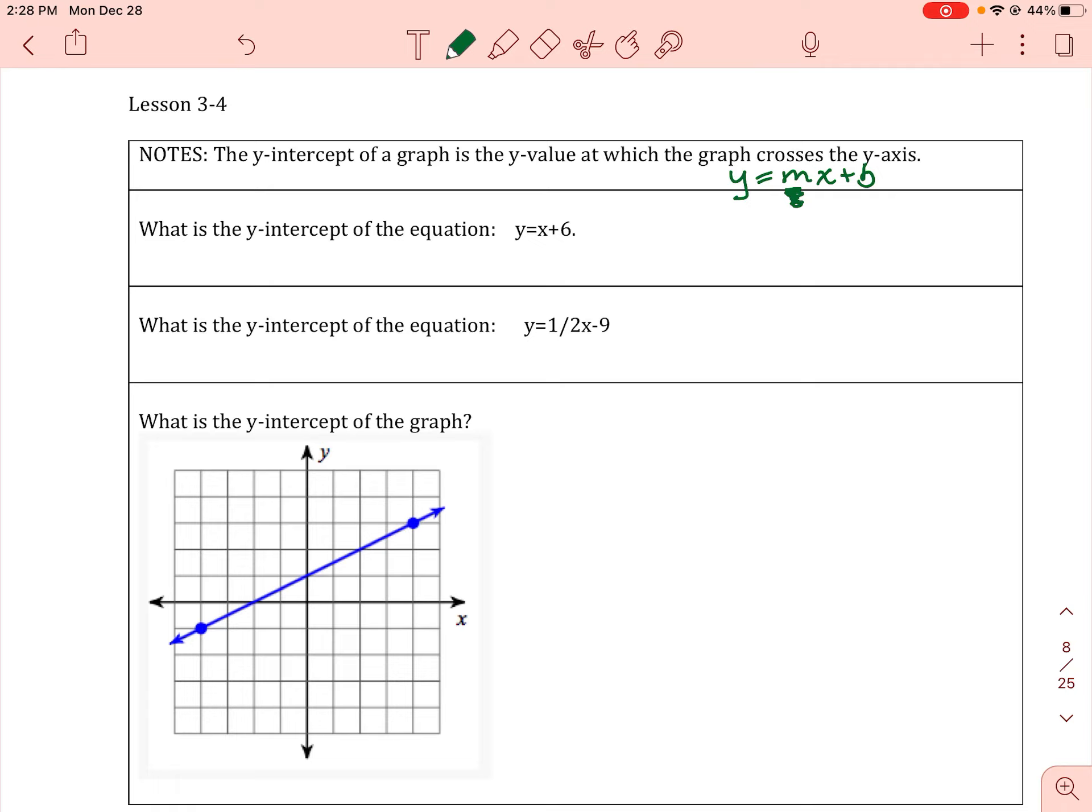The number that does not have a variable, the constant, is going to be b and that is your y-intercept.